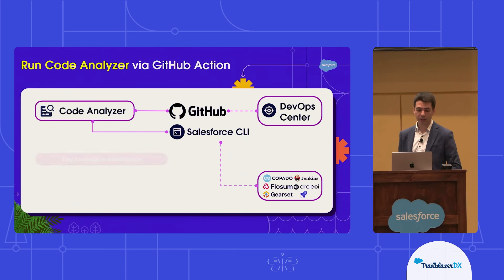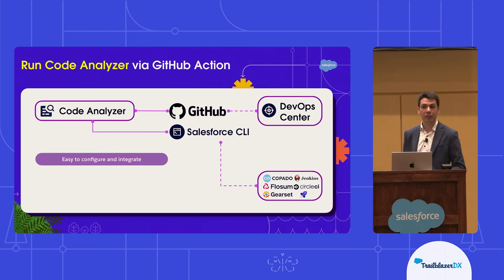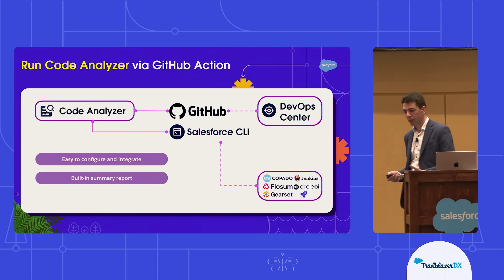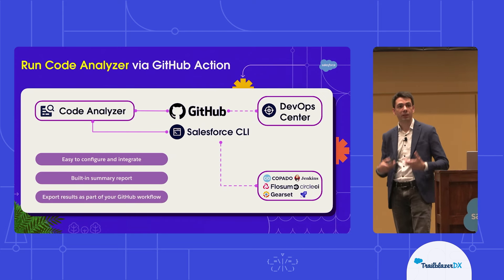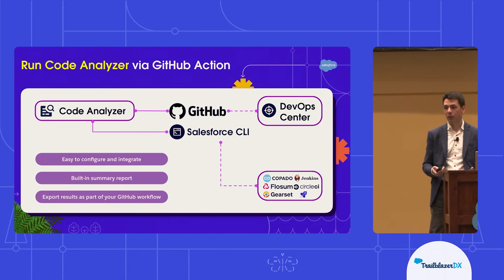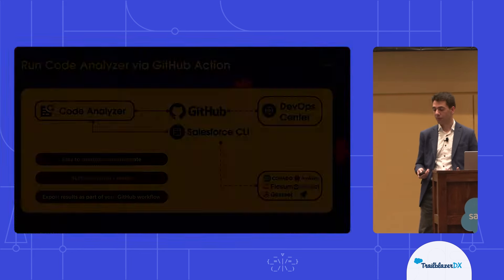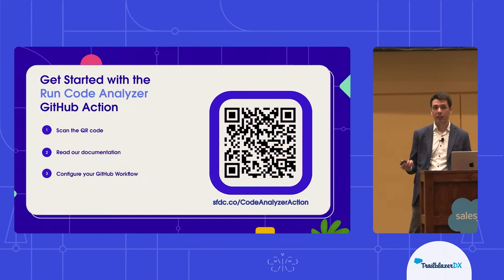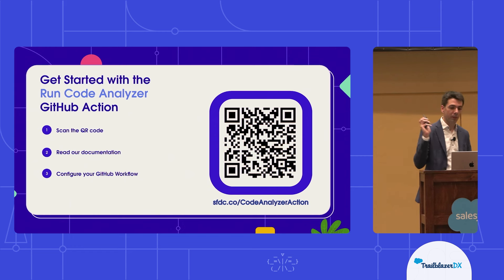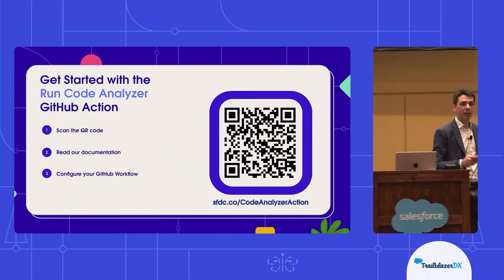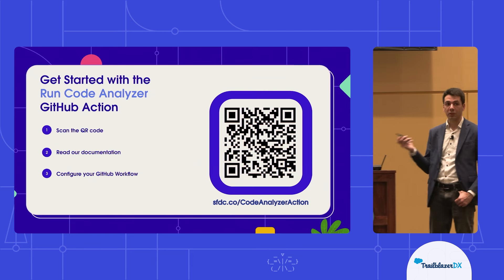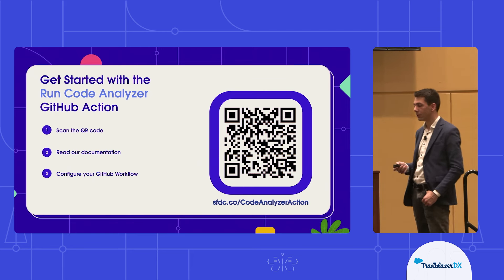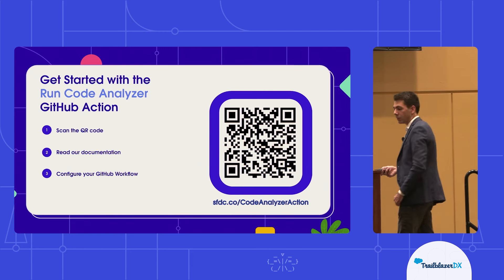As for the GitHub Action, it is super easy to configure and integrate. It provides you with a summary report and provides you with an artifact that you can then use in subsequent steps of your workflow. To get started with our GitHub Action, just go ahead, scan the QR code, read our docs, and configure your workflow — and it's pretty much ready to go as soon as you do that.